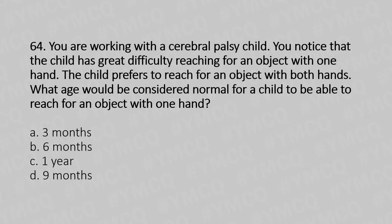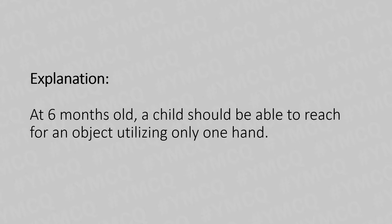Moving to our 64th question. You are working with a cerebral palsy child. You notice that the child has great difficulty reaching for an object with one hand and prefers to reach with both hands. What age would be considered normal for a child to be able to reach for an object with one hand? Option A: 3 months. Option B: 6 months. Option C: 1 year. Option D: 9 months. The answer is Option B — 6 months. A six-month-old child should be able to reach for an object utilizing only one hand.